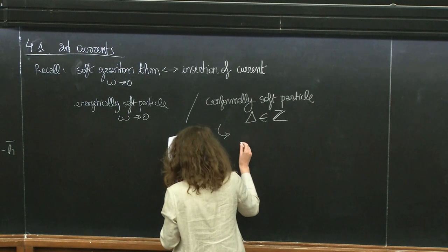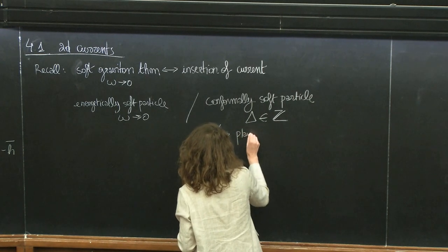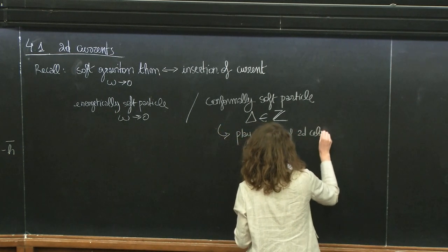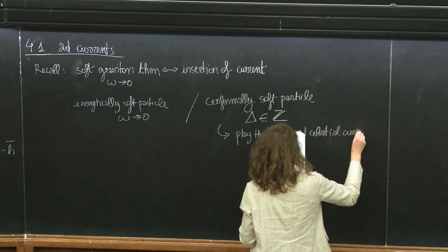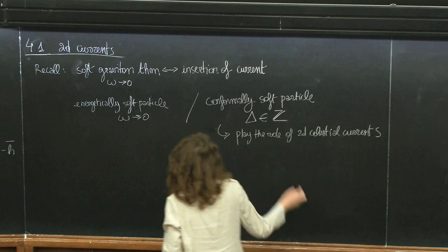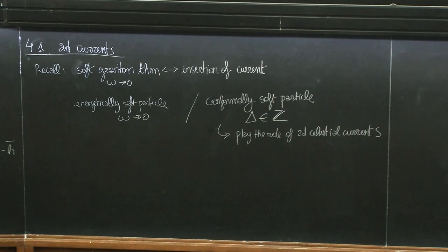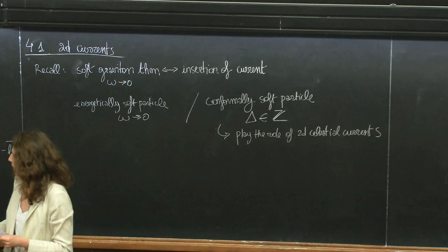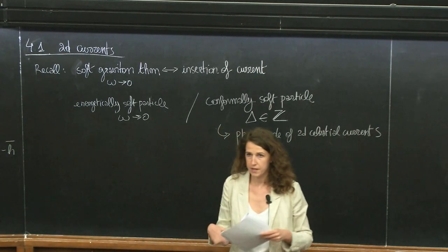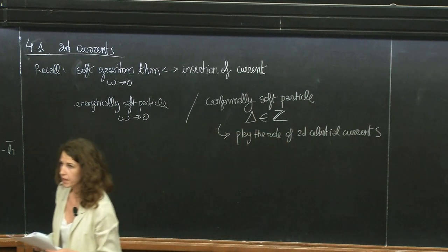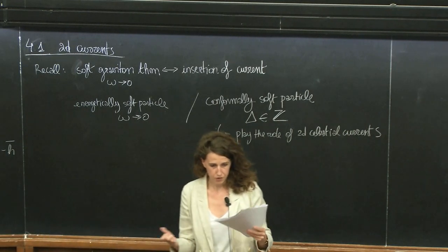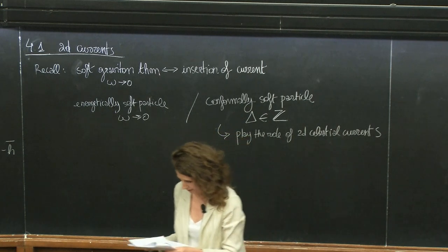What people have come to realize is that there is an analogous, or dual, formulation of softness in the celestial basis. Before, energetically soft meant taking energy to zero. Now in celestial holography, a conformally soft particle is a celestial object for which the conformal dimension takes specific integer values. These objects play the role of two-dimensional celestial currents. Today I want to present two specific values: delta equal to one and delta equal to zero, which give us the super-translation current and the famous celestial stress tensor.